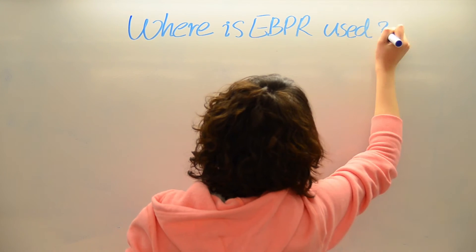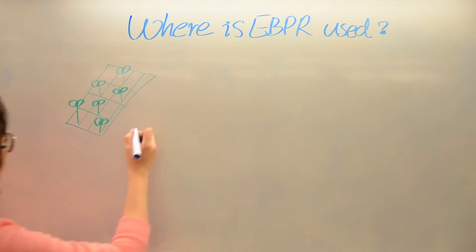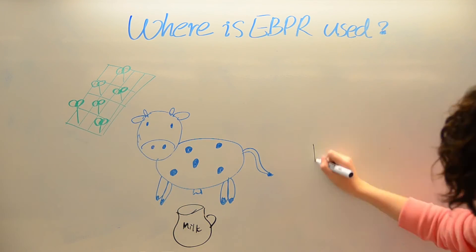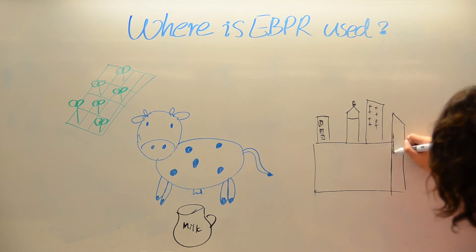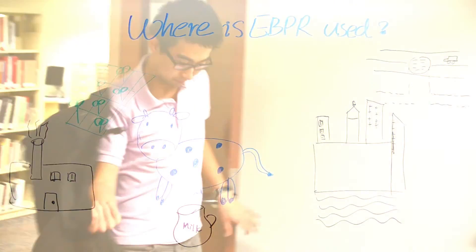EBPR is widely used in agricultural settings — farming, livestock and milk production — as well as in municipal wastewater treatment, drainage water treatment, and to clean industrial effluent.